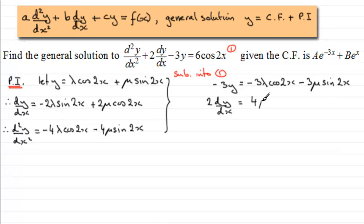And if I double this term, we're going to have minus 4 lambda sin2x.